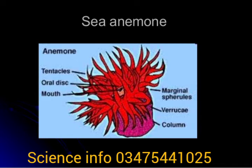Coelenterates are carnivores that feed on organisms, and food is transported through diffusion. There is no central nervous system. Coelenterates produce a hard exoskeleton of calcium carbonate and reproduce both asexually and sexually.